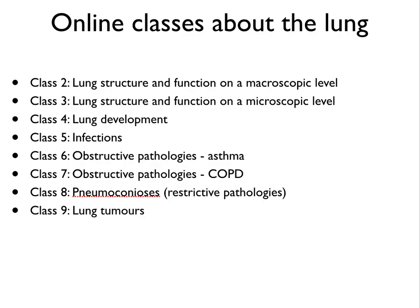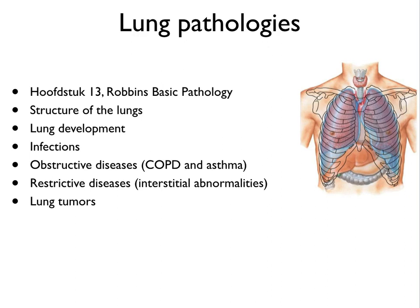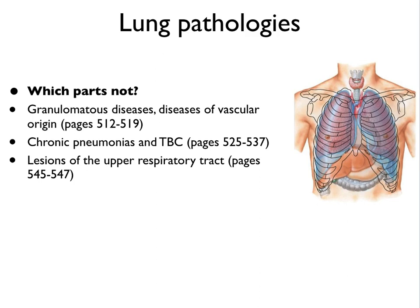There are a couple of online classes about the lung — in total there are nine, so eight more in addition to this introduction. On this slide you can see which ones there are: lung structure and function on the macroscopic and microscopic level, lung development, infections, obstructive pathologies, asthma and COPD, restrictive pathologies also known as pneumoconiosis, and lung tumors. This is all based on Robin's Basic Pathology, Chapter 13. There are also parts in this book that you don't have to study for this course, and they're on this slide.